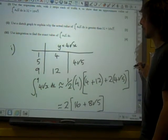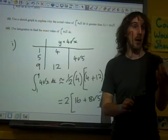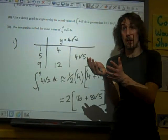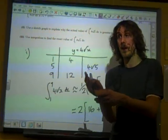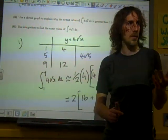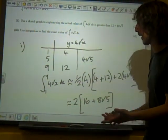Use a sketch graph to explain why the actual value is greater than that. You'll notice that if you go back through papers, this is a really common thing, isn't it, with the trapezoidal questions. State whether your answer is an underestimate or an overestimate with a reason. And a sketch graph is always a good way of doing it.